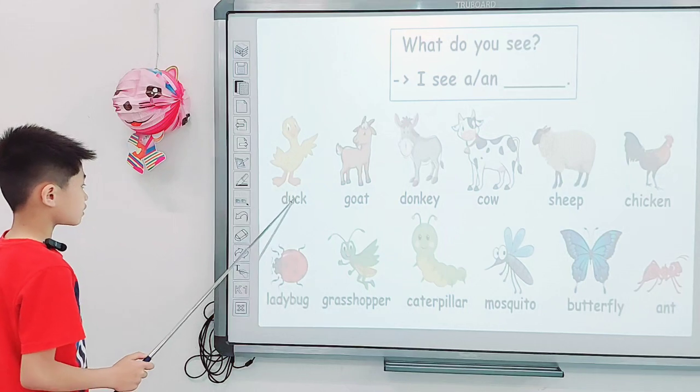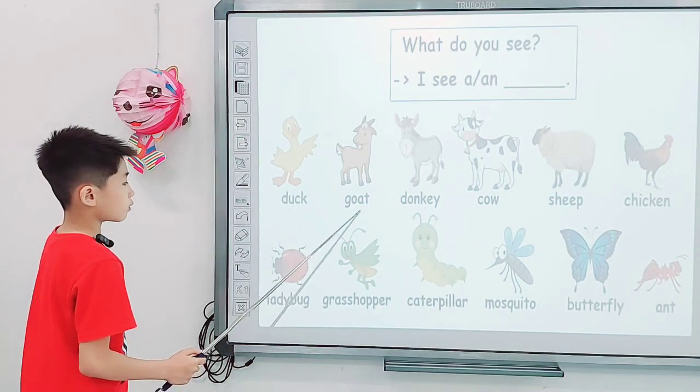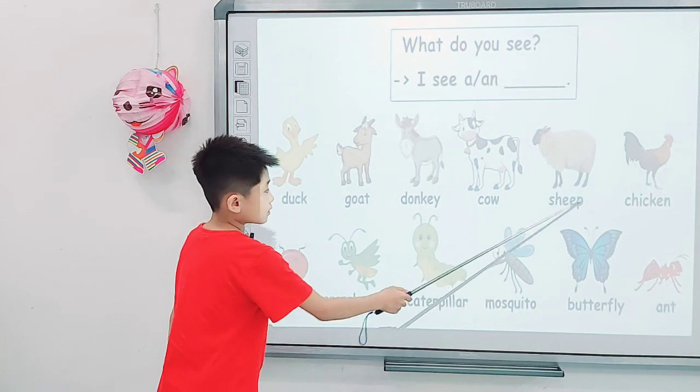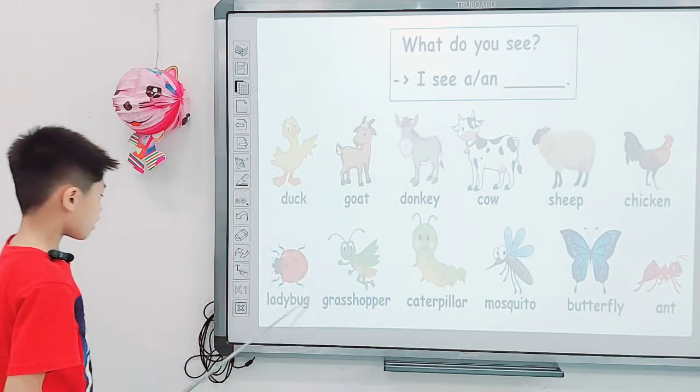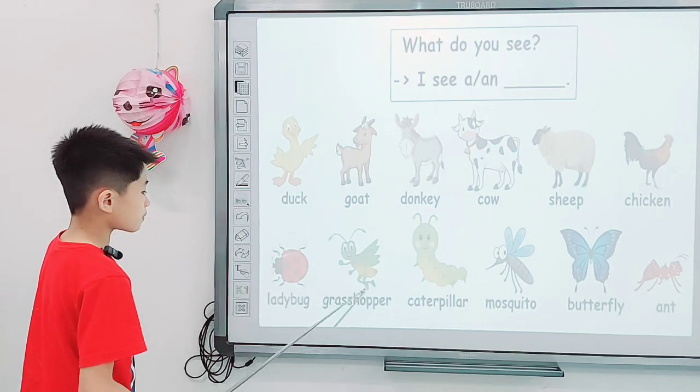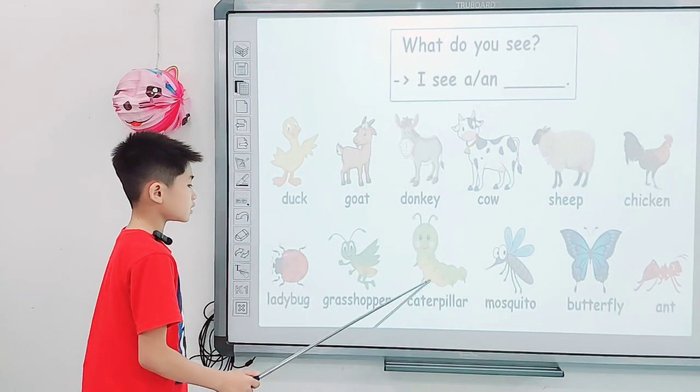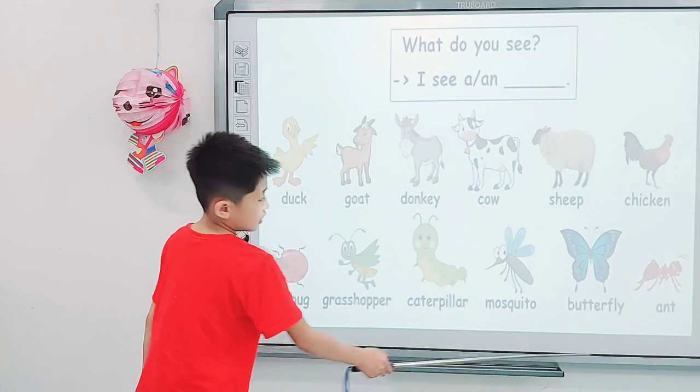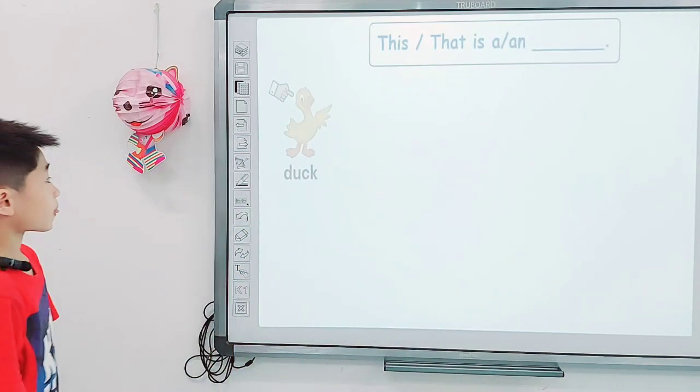Tell me what do you see? I see a duck, I see a goat, I see a donkey, I see a cow, I see a sheep, I see a chicken, I see a ladybug, I see a grasshopper, I see a caterpillar, I see a mosquito, I see a butterfly, I see an ant.